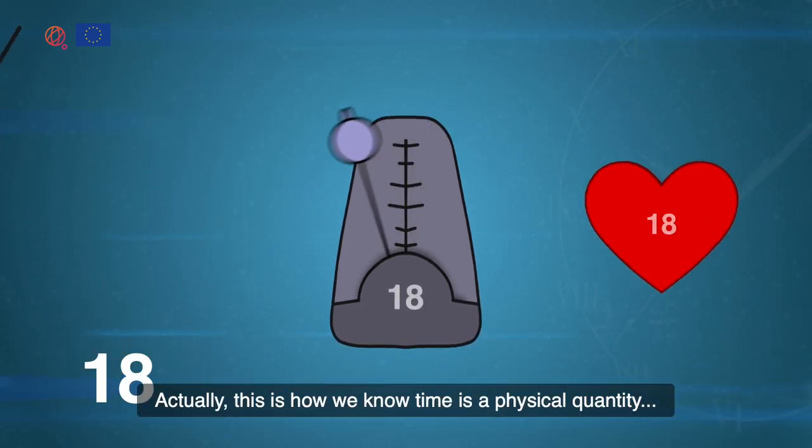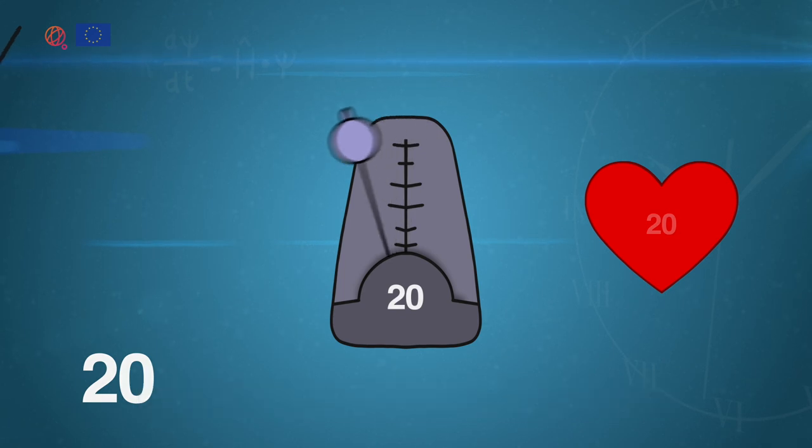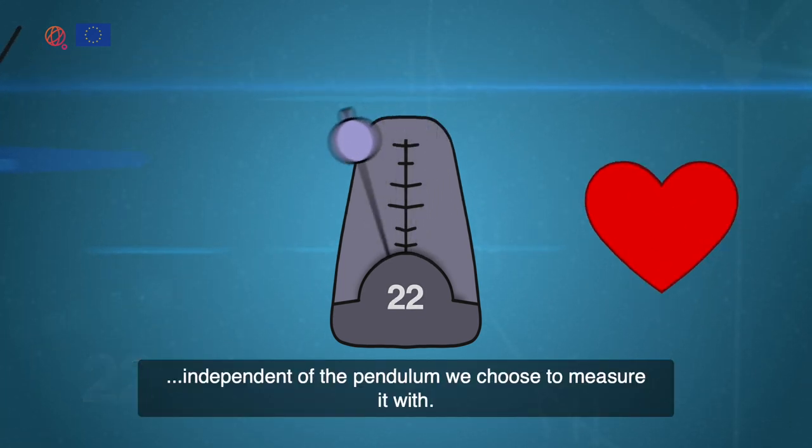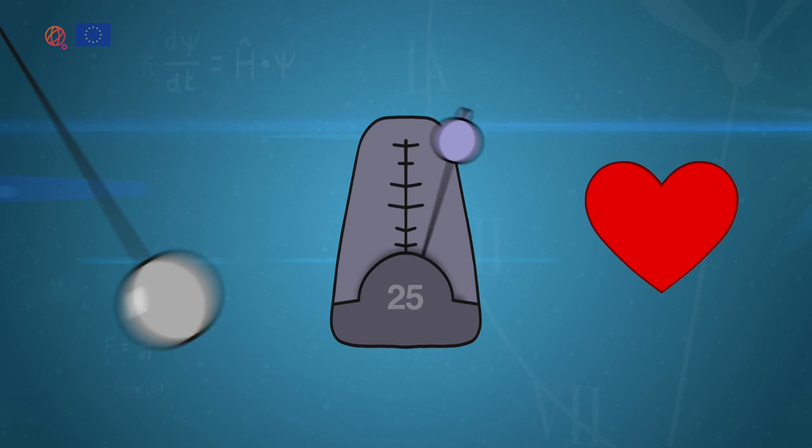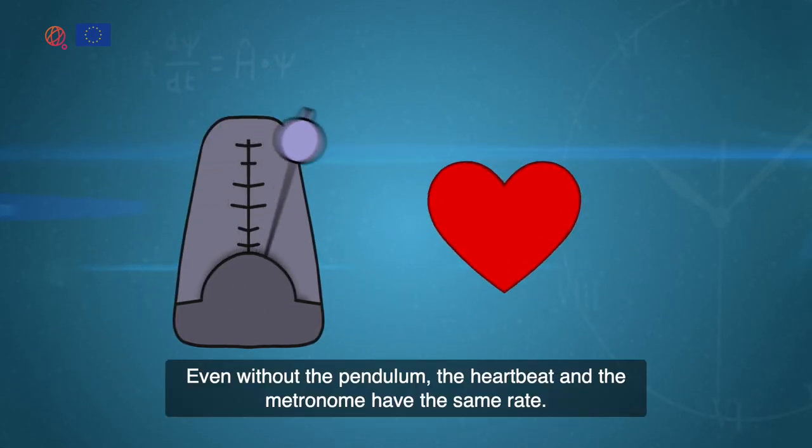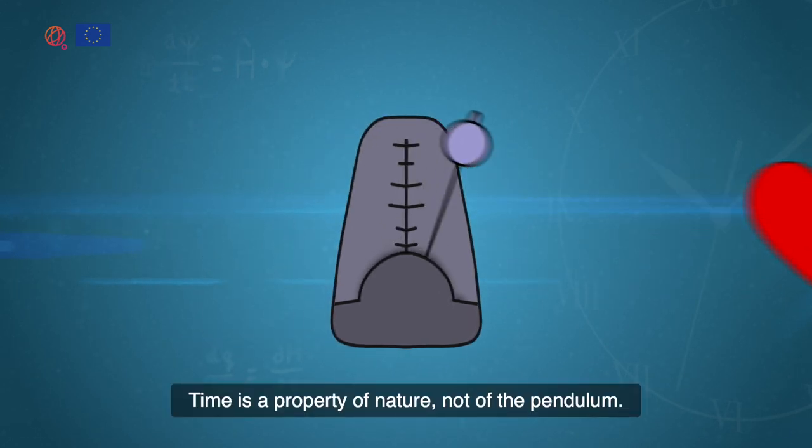Actually, this is how we know time is a physical quantity, independent of the pendulum we choose to measure it with. Even without the pendulum, the heartbeat and the metronome have the same rate. Time is a property of nature, not of the pendulum.